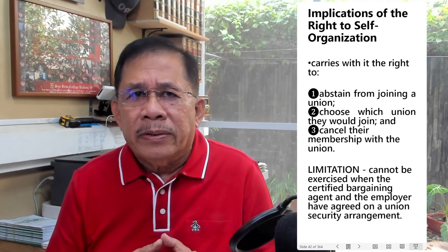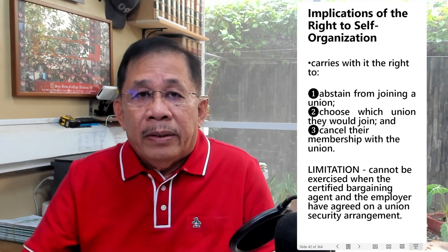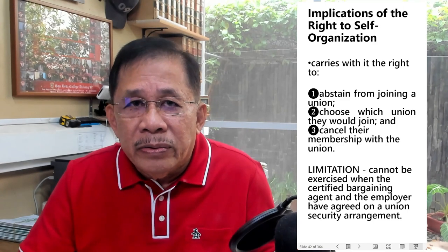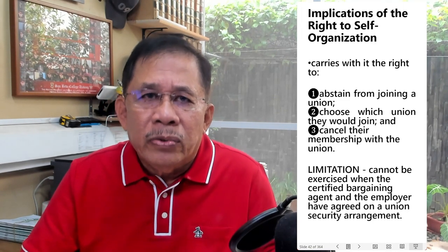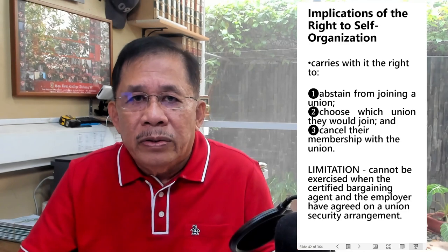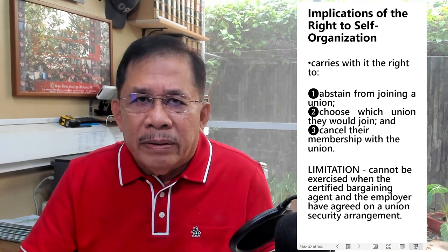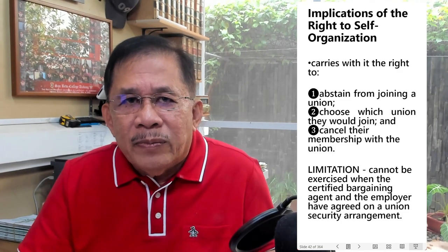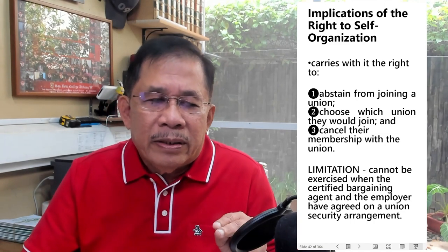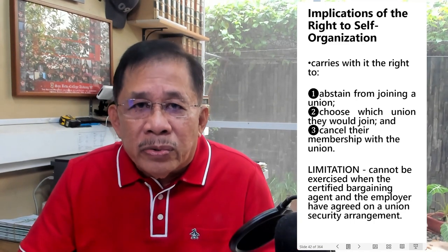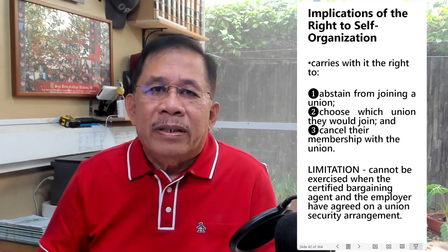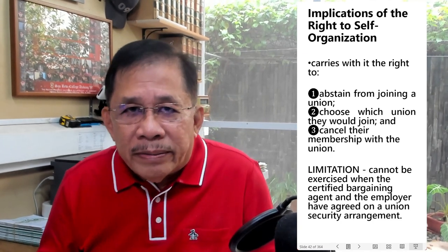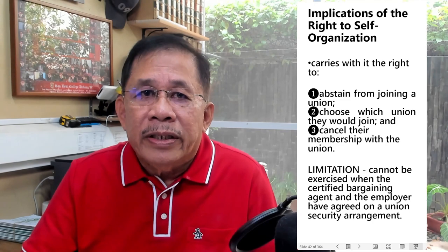What are the implications of the right to self-organization? The right to self-organization carries with it the right to abstain from joining a union, the right to choose which union they would join, and the right to resign from the union. But these rights cannot be exercised when the contracting union and the employer have agreed on a union security arrangement.